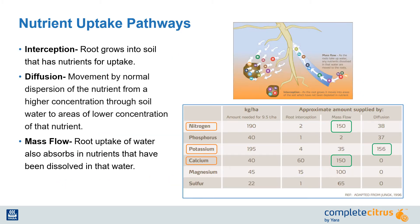There are three ways nutrients make their way into the roots from the soil. They are root interception, diffusion, and mass flow.